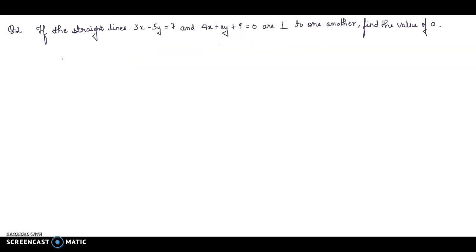If the straight lines 3x - 5y = 7 and 4x + ay + 9 = 0 are perpendicular to one another, find the value of a. That means these two lines are perpendicular. This is 3x - 5y = 7 and this is 4x + ay + 9 = 0.